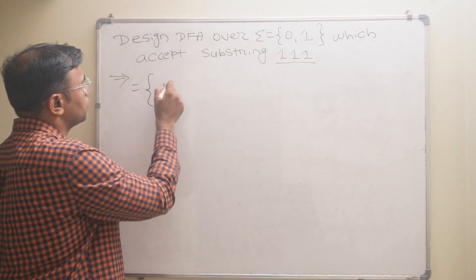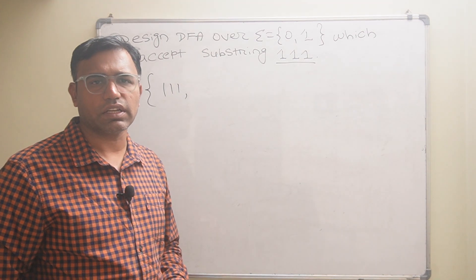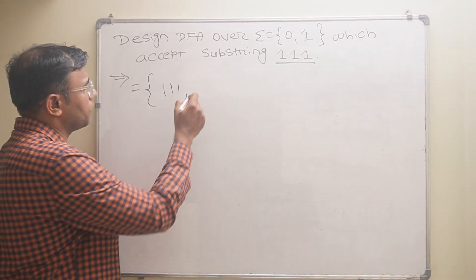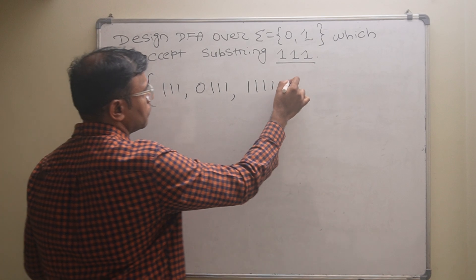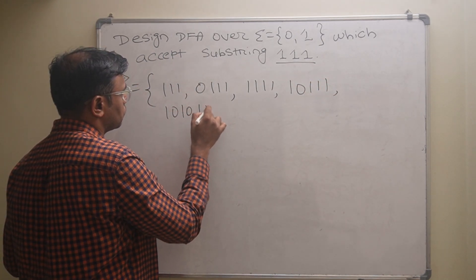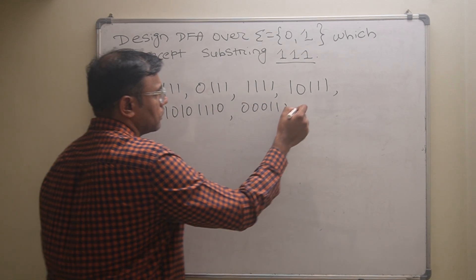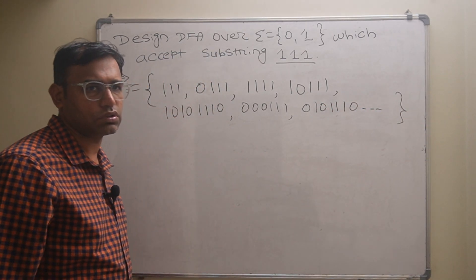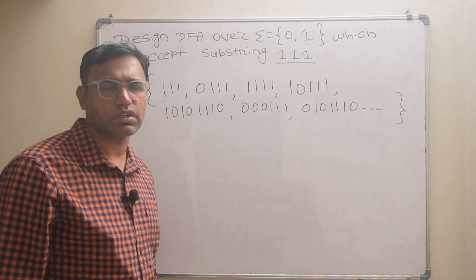I will write all the possible strings which contain substring triple-one. The first string is 111. Strings can start with 0 or 1 and end with 0 or 1, but must contain substring 111. For example: 0111, 1111, 1011, 10101110, 000111, 0101110, and so on. Using these values we can construct the DFA.